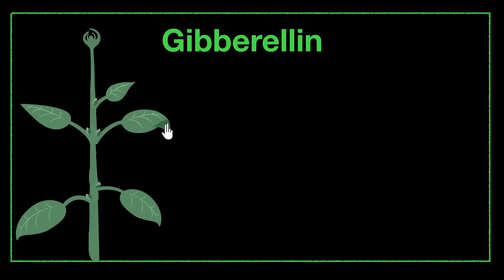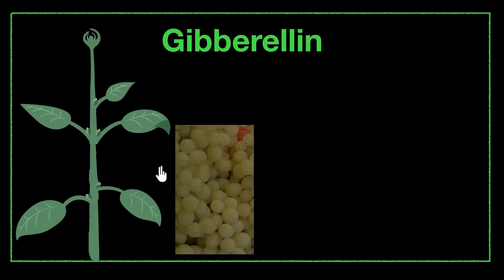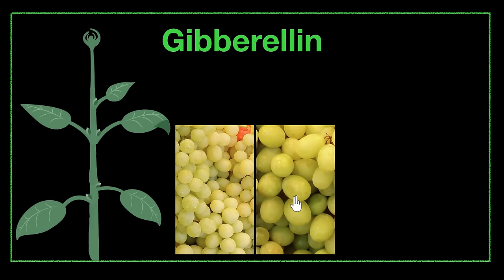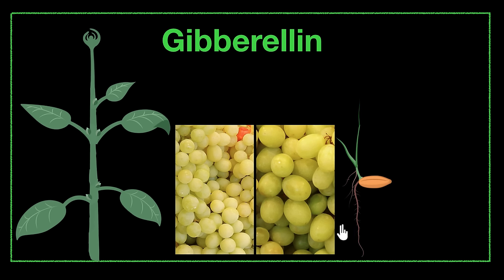Gibberlin has other functions too. Since it's a growth hormone, it's also responsible for causing elongation in fruits — fruits grow long because of gibberlin. For example, seedless grapes are usually tiny, but you can artificially spray gibberlin on them to make them bigger. Another important function of gibberlin is seen during seed germination — if you want a seed to germinate, you need a lot of gibberlin. Without it, the seed will not germinate at all. Once enough gibberlin accumulates, only then the seed will start growing.